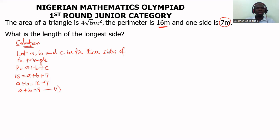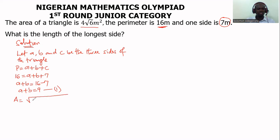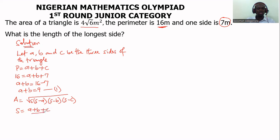The question also gives us an area of 4√6. Because we have the perimeter in the question, we're going to use the area of the triangle using Heron's formula. The area using Heron's formula is: Area = √(S(S−A)(S−B)(S−C)), where A, B, and C are the three sides of the triangle. And S is the semi-perimeter, that means A plus B plus C over two, which is the same as the perimeter over two.